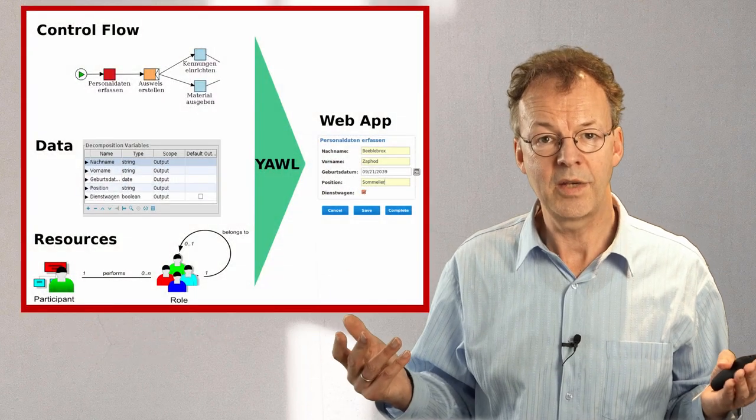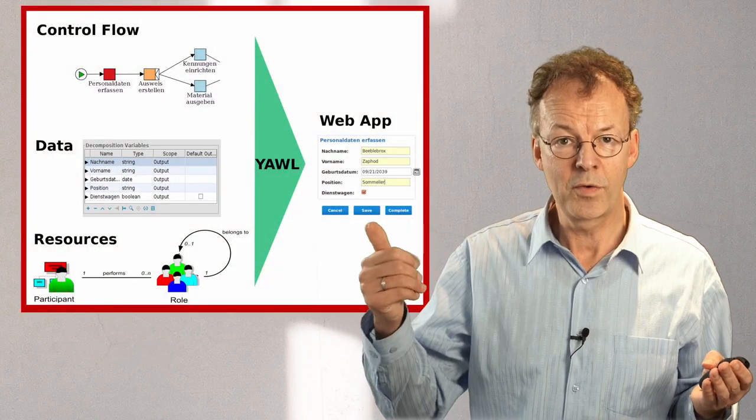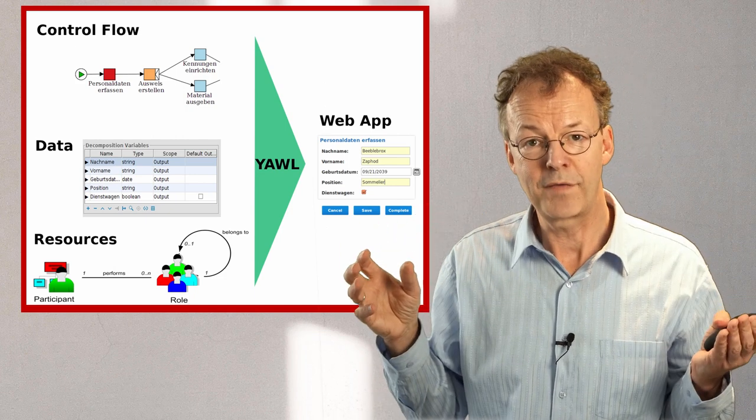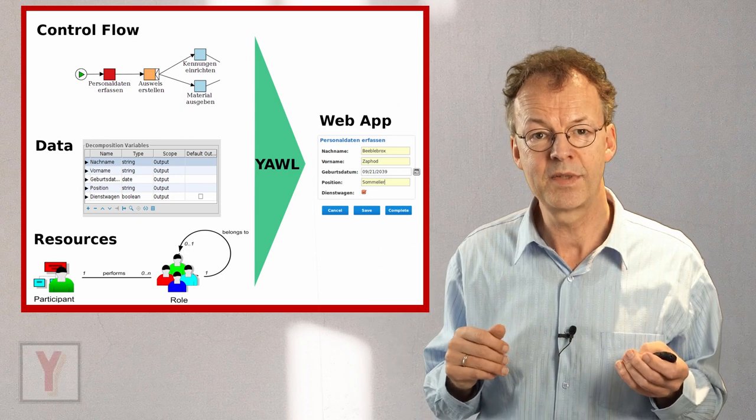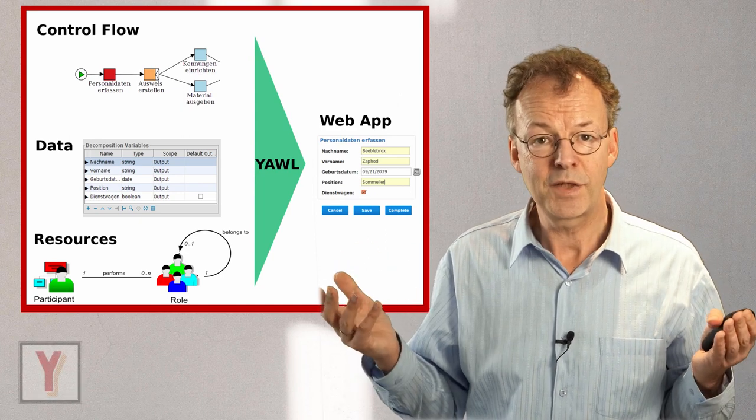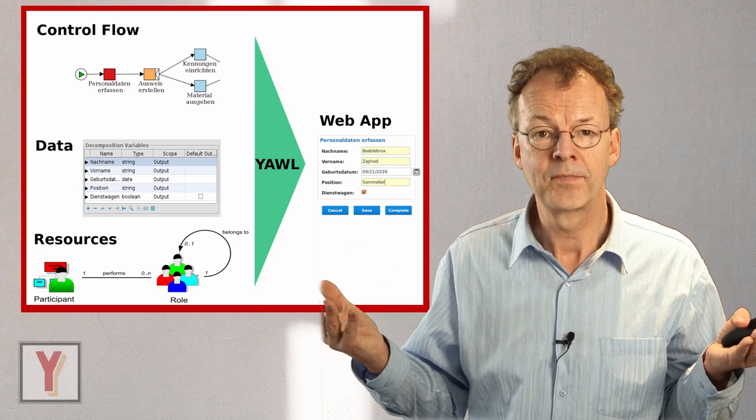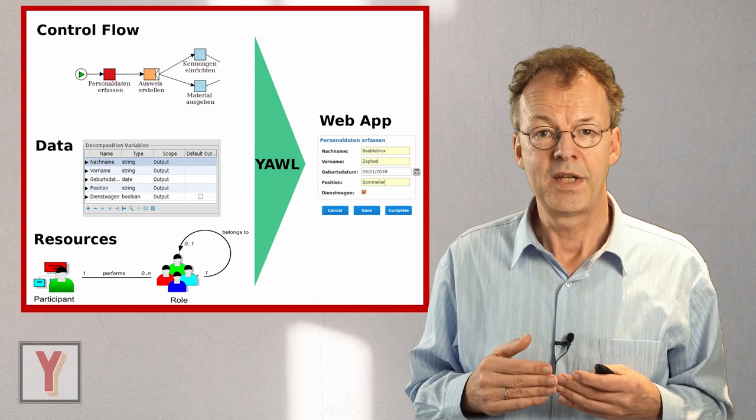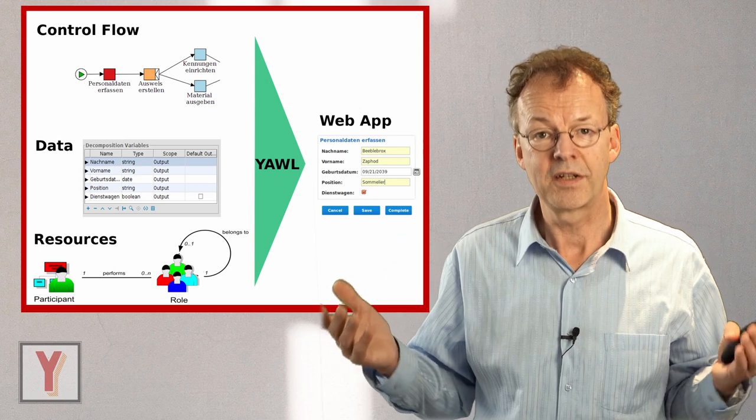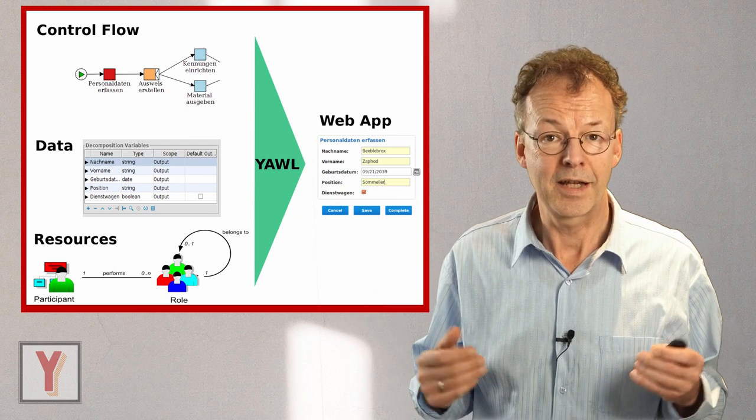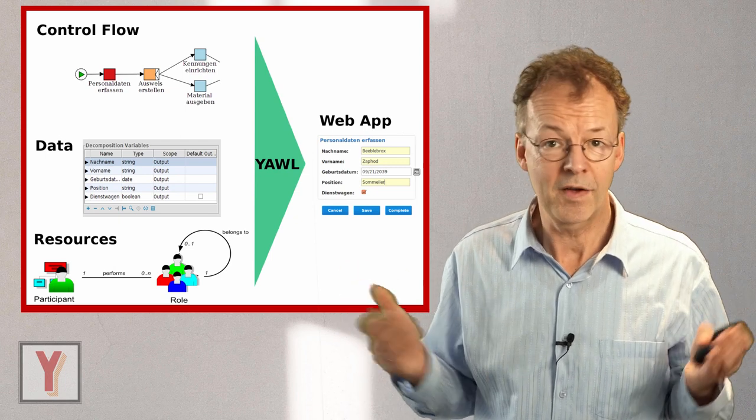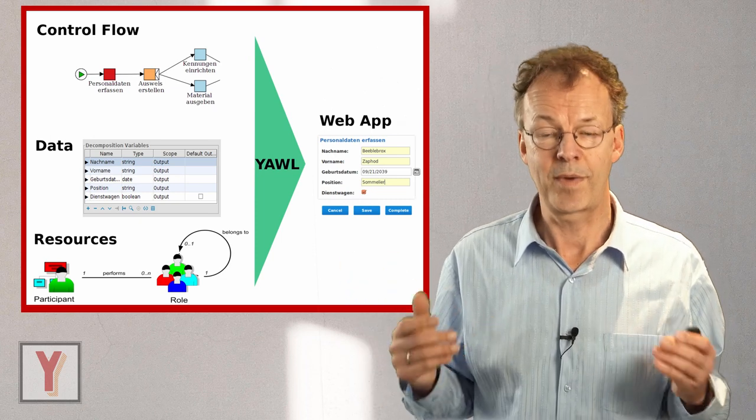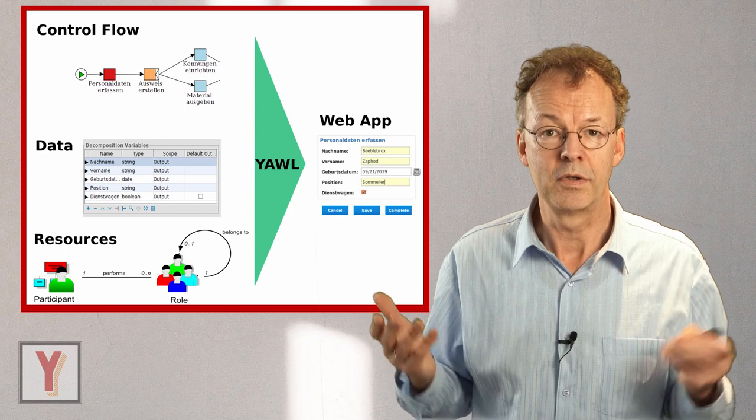And here on the slide behind me, you can see the control flow as a series of tasks depicted in some kind of graphical notation. This is typical for workflow management systems. Then you have the data specification in textual format here and the resources. And the workflow management system here happens to be YAWL, yet another workflow system. A system that I like personally, but it could be any other workflow management system. And then on the right hand side, you can see the web application that results from the whole specification.